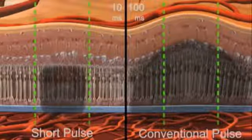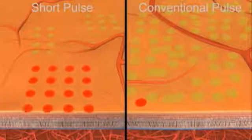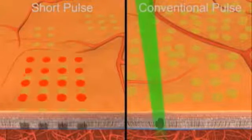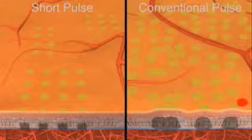In addition, PASCAL's uniform pulses and semi-automated pattern delivery prevent further collateral damage that can result from uneven power and irregular spacing of traditional laser pulses.